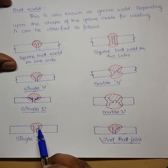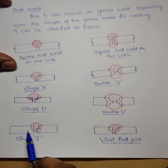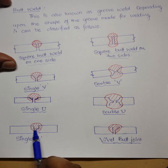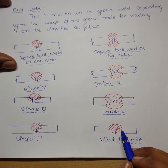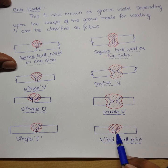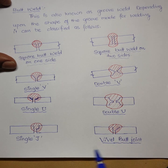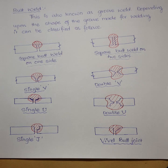Finally, there is the J type butt weld — the J shape is cut on only one piece of the metal while the other piece is kept unaffected. Only one side plate is cut in this J shape and joined to the uncut plate; this is called a single J butt joint. These are the classifications of butt joints.